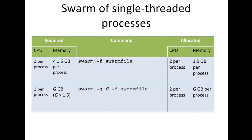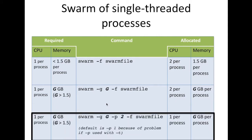Since these are single-threaded processes using one CPU each, but the batch system allocates two CPUs per process, half the CPUs will sit idle. For a small swarm of 10 subjobs, 10 CPUs sitting idle is fine. But for a swarm of a thousand subjobs, the batch system allocates 2,000 CPUs with 1,000 idle. In that case, you can increase throughput by packing processes two per core using the -p flag. By default -p means one process per core, but -p 2 packs two processes onto each core so all allocated CPUs are used.